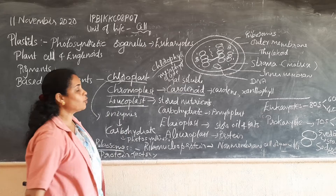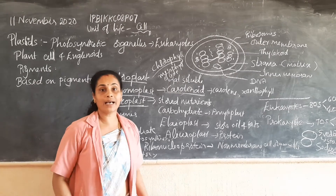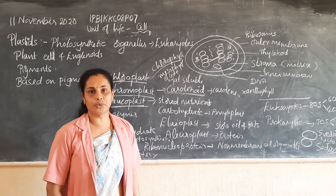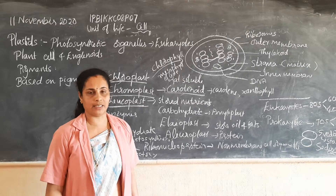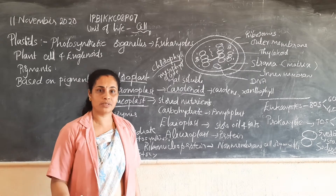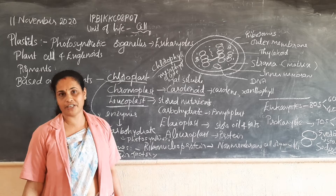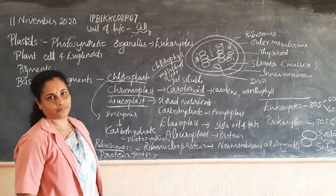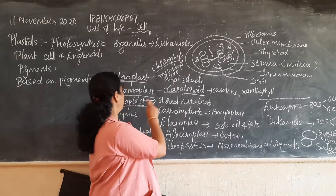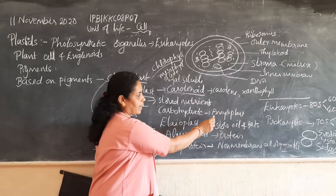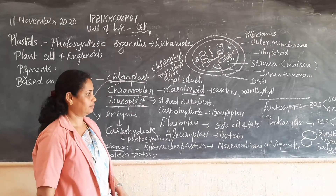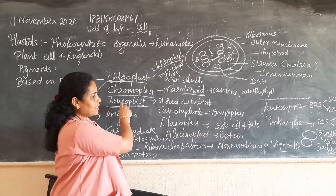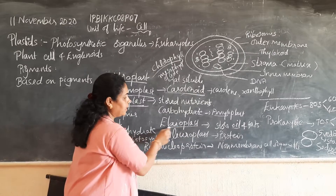Another plastid is leukoplast - it is nothing but colorless plastids. They are mainly meant for storage of nutrients, mainly in roots or stems during modification. If carbohydrates are stored in leukoplast, they are called amyloplast. If fats as well as oils are stored in leukoplast, they are called elaioplast.